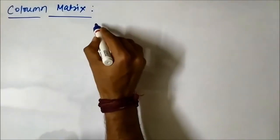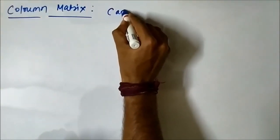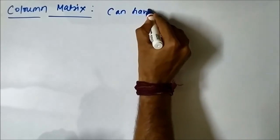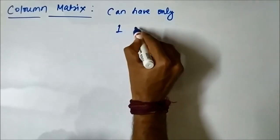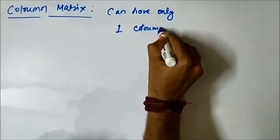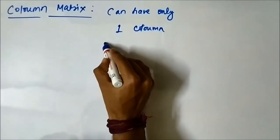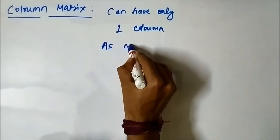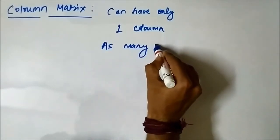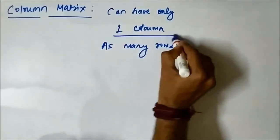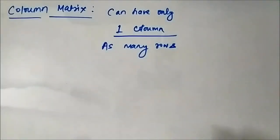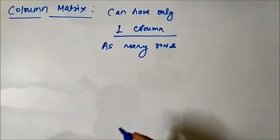The column matrix can have only 1 column. It can have only 1 column and as many rows. There is no restriction on the number of rows, but only 1 column. It can have only 1 column.